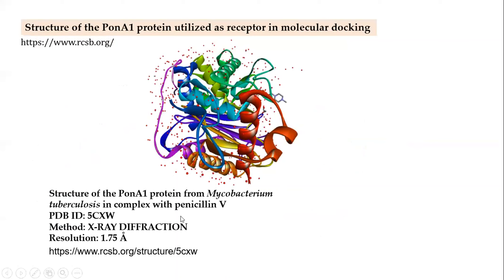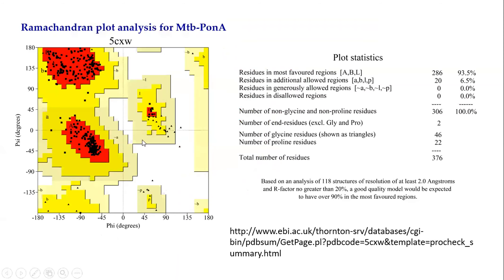This is the structure of the protein PonA1, retrieved from RCSB PDB. Its resolution is 1.75 Ångströms and the method of preparation was X-ray diffraction. The PDB ID is 5CXW0. This is the PonA1 protein isolated from Mycobacterium tuberculosis, in complex with penicillin V. The red dotted forms represent solvent molecules. Before molecular docking, we must prepare the protein structure: removing solvents, the penicillin ligand, and other ions, so that complete protein preparation is done in UCSF Chimera.